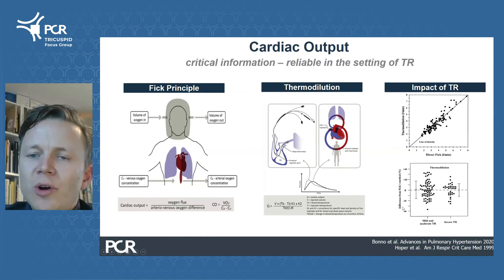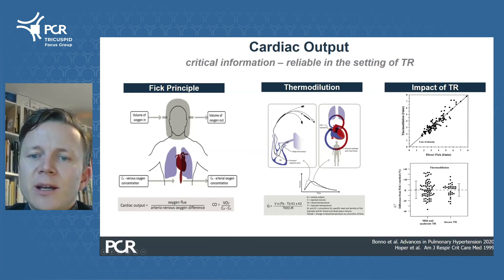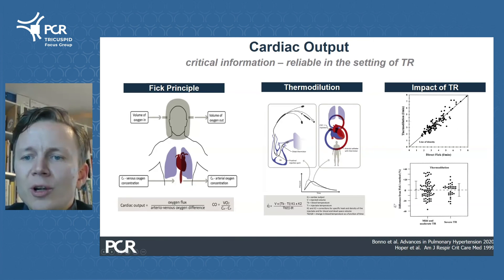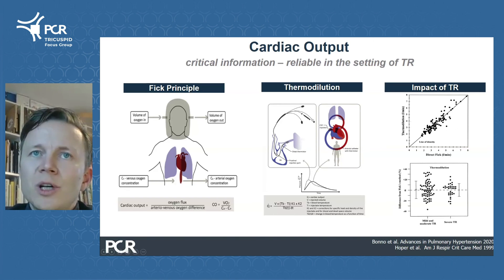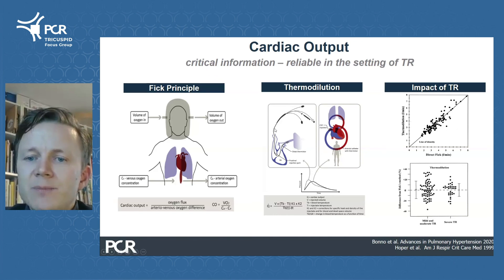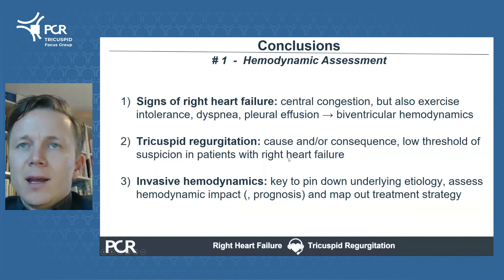Finally, I strongly advocate for the assessment of cardiac output during right heart catheterization — it is essential to characterize pulmonary hypertension and to get an overall impression of the hemodynamic state of your patient. Contrary to common belief, cardiac output measures in the setting of tricuspid regurgitation are reliable. This holds true for the Fick principle but also for thermodilution, where inaccuracies primarily arise from low output states rather than issues related to tricuspid regurgitation itself.